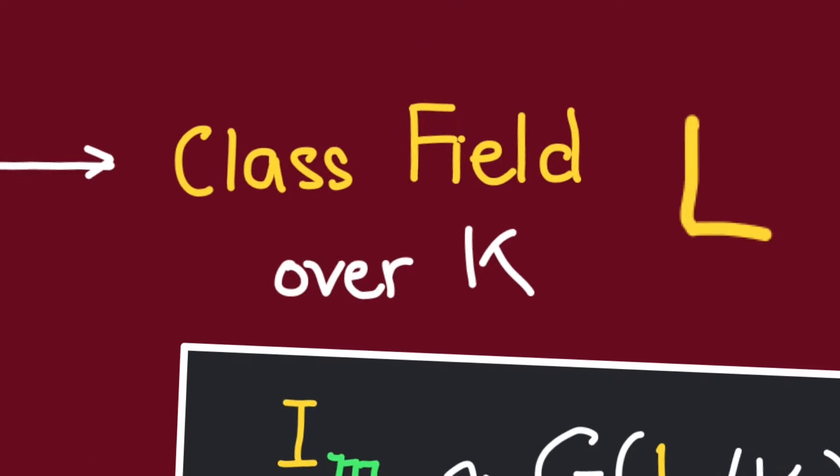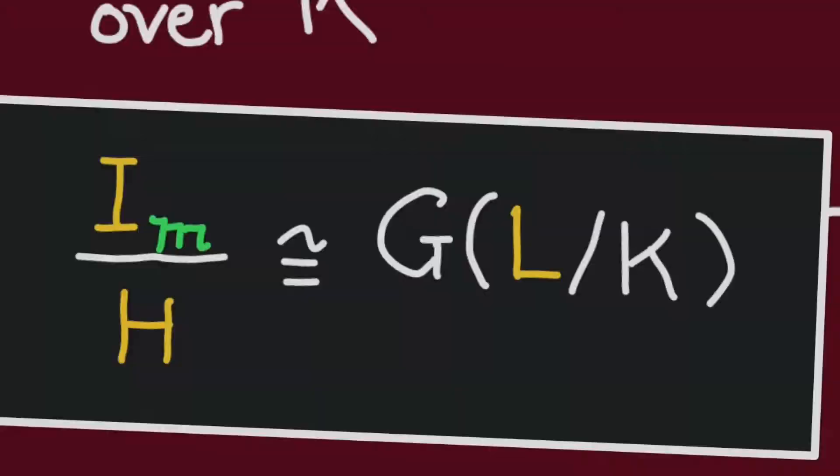However, as we've mentioned, Takagi wasn't able to give an explicit map for this isomorphism. This explicit description was later established by Emil Artin.